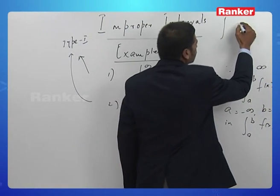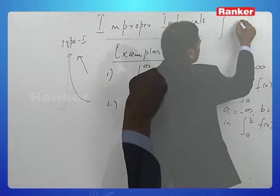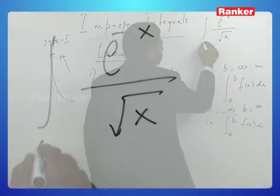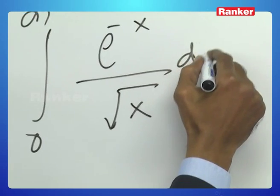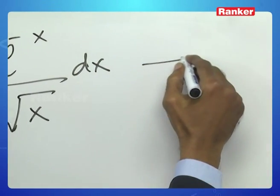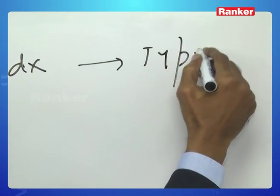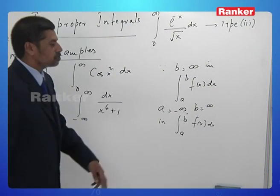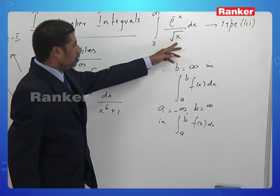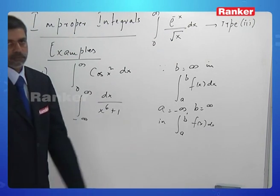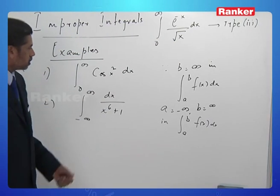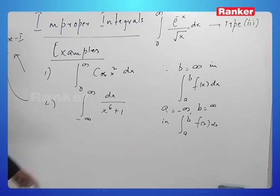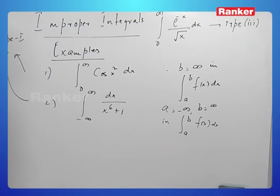Then we can have ∫ from 0 to infinity of e^(−x) / √x dx. This is a Type 3 improper integral because x = 0 happens to be a singularity. So these are examples for Type 1, Type 2, and Type 3 improper integrals.